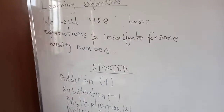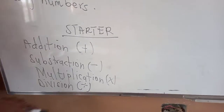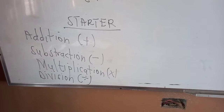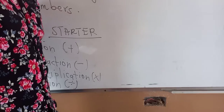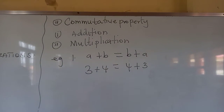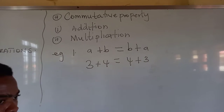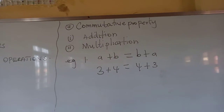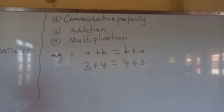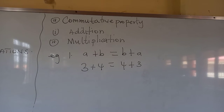Let us look at our starter for the day. We have addition, subtraction, multiplication, and division. Now, aside from the basic operations in mathematics, we also have eight properties under investigation with numbers. We have commutative property, associative property, and distributive property. But in this lesson we are going to look at two: commutative property and associative property.